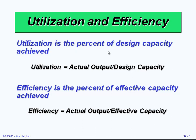Based on the definitions of both design capacity and effective capacity, we can define utilization and efficiency. Utilization is the percent of design capacity achieved — actual output divided by design capacity. Efficiency is the percentage of effective capacity achieved — actual output divided by effective capacity.